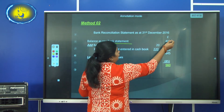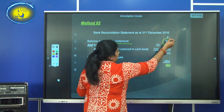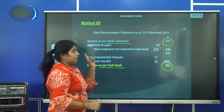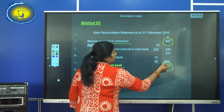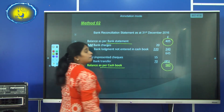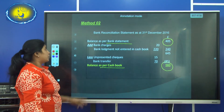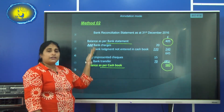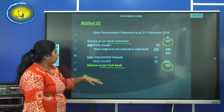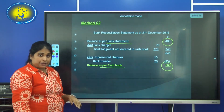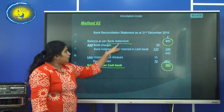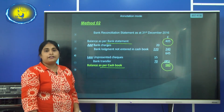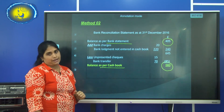Here you started with 405 and arrived at the cash book balance of 560. So there are two sub-methods: either start with the cash book balance and end with the bank statement balance, or start with the bank statement balance and end with the cash book balance.